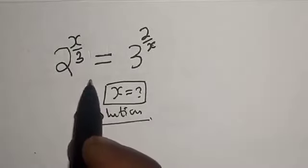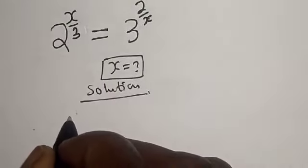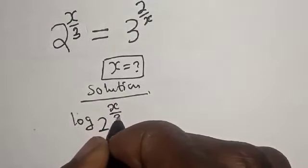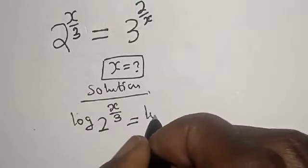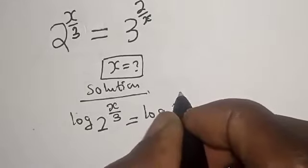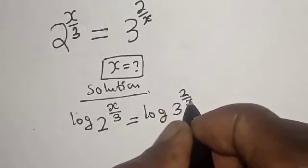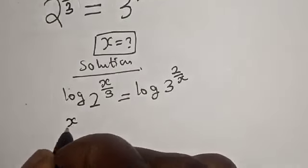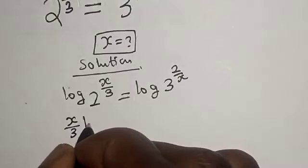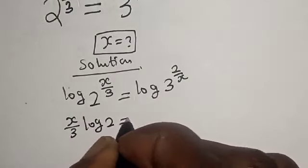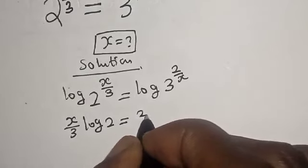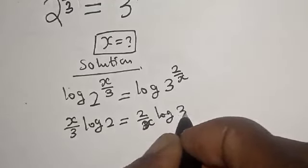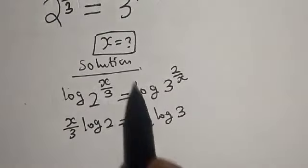From here, let's take the log of both sides. Log 2 raised to power x divided by 3 is equal to log 3 raised to power 2 divided by x. Then this is x over 3 log 2 is equal to 2 over x log 3.